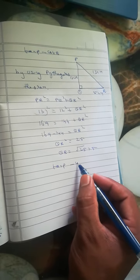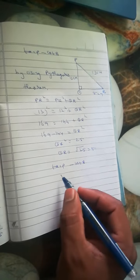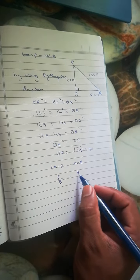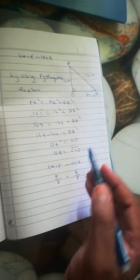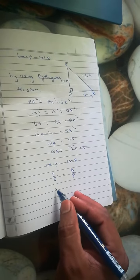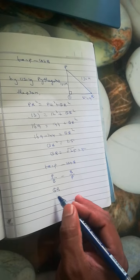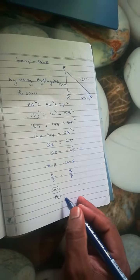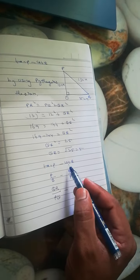Tan formula is P/B, and cot is the reciprocal B/P. Tan P means perpendicular is 5 (QR) and base is PQ.